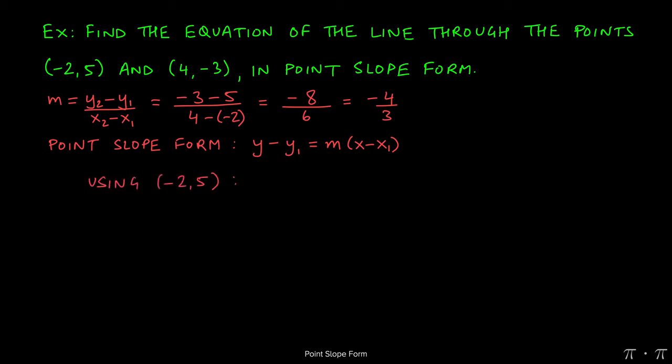Negative 2 comma 5 in the equation of this line, the equation would be y minus y1 which is 5, equals m which is the slope negative 4 thirds, times x minus x1 which is the x-coordinate negative 2.